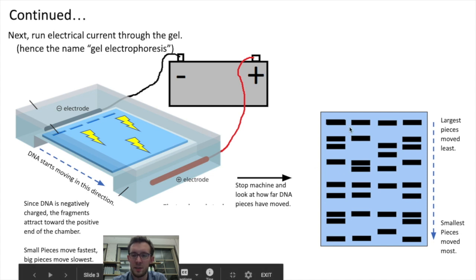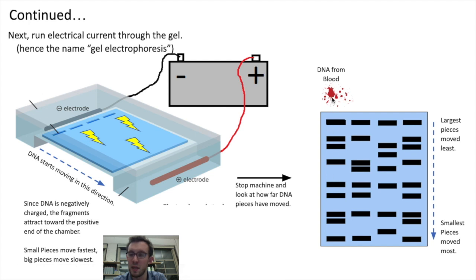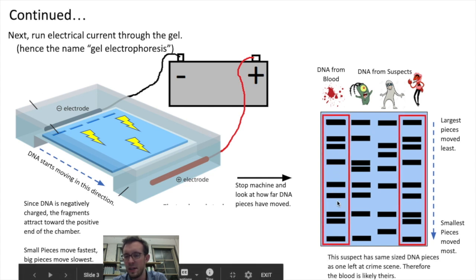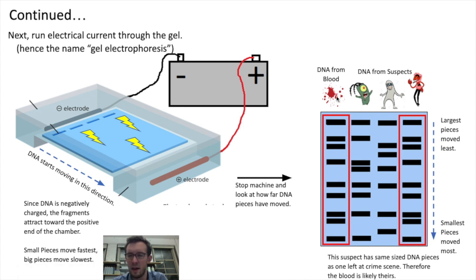So now to re-acclimate to our particular sample, this sample of DNA on the far left was taken from blood at the crime scene, whereas these three samples of DNA were taken from our suspects. And so what you can notice by looking at these different patches of DNA and how far they've moved through the gel is that this particular suspect's DNA, these patches of DNA, are the exact same size and have moved the exact same distance through the gel as the DNA that was at the crime scene. And so, therefore, this blood taken from the crime scene likely belongs to this suspect.